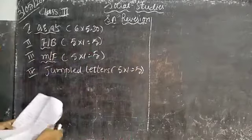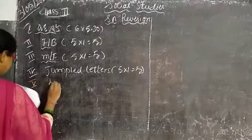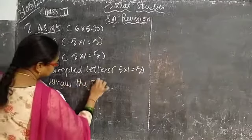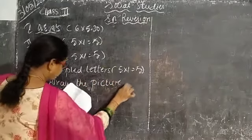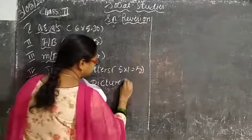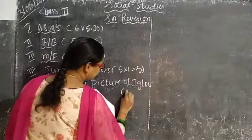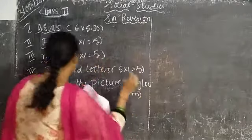You have the last one. What is the last one? Draw the picture. Draw the picture of the igloo, of the igloo. And then you have them with the five marks.